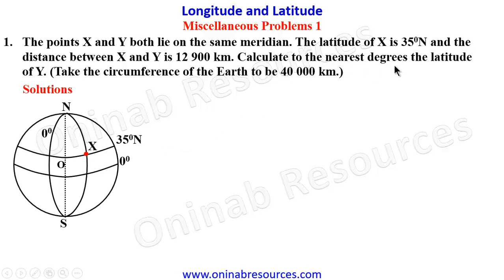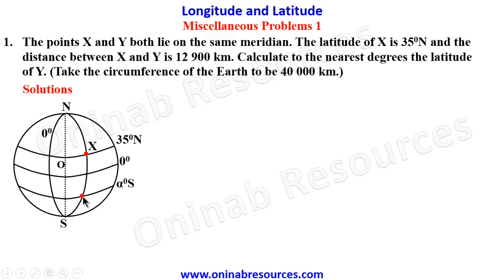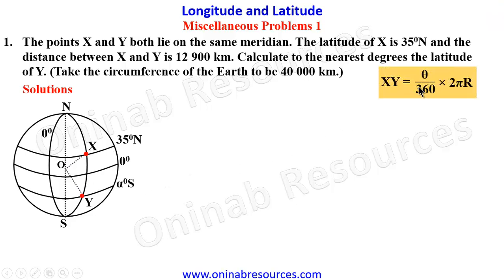Y is believed to lie in the south; we don't know whether it is before or after the equator, so we place it after the equator. We call it alpha degrees south, and that point is Y. We can see we have a sector along a great circle which will represent the distance between X and Y. We will make use of the formula: XY = (theta / 360) × 2πR, where 2πR represents the circumference of the Earth.